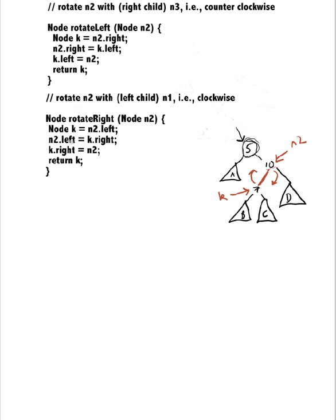And it says N2's left is assigned to be the value K's right. Here's what K's right points to, so N2's left will now point here. That'll be my new N2's left.